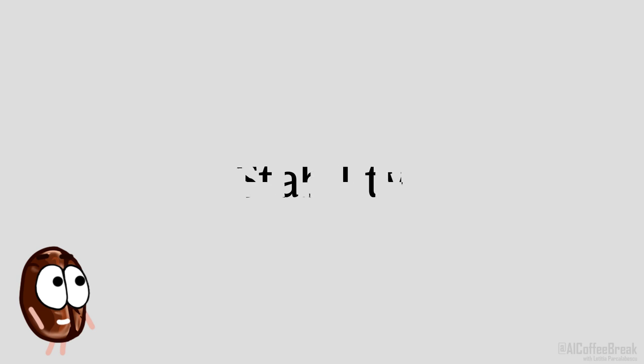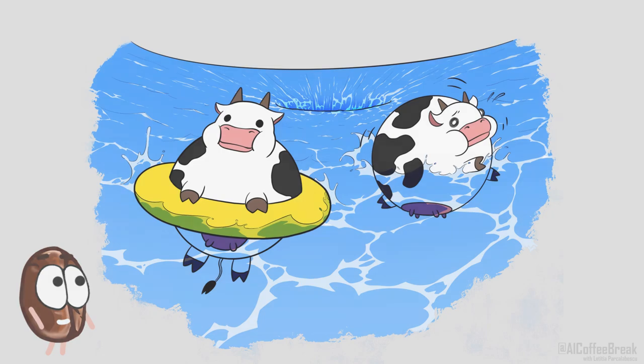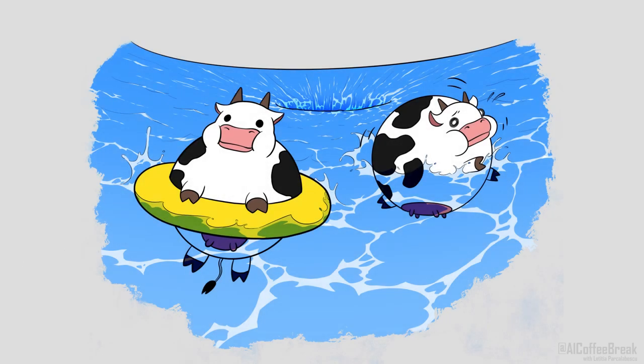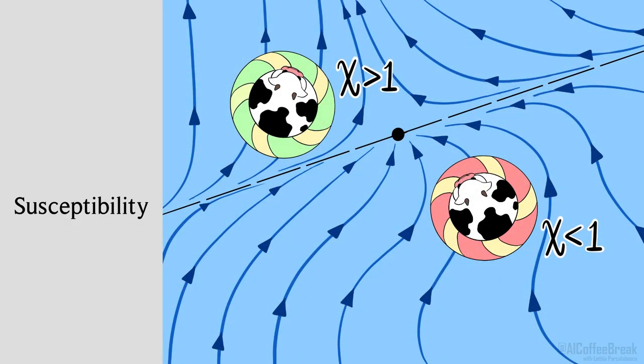We can further characterize fixed points by looking at their immediate neighborhood. Imagine you're drifting close to a fixed point. Again, there are several things that can happen. It could be that the flow will suck you into the fixed point, or that you drift away from it, and if you're exactly on the cusp, you remain at the same distance. To quantify which direction the current will take you, we introduce a parameter chi, called the susceptibility. For chi less than 1 you'll be pulled in at an exponential rate towards the fixed point, while for chi greater than 1 you're pushed away exponentially. And for chi equals 1, you stay at the same distance.